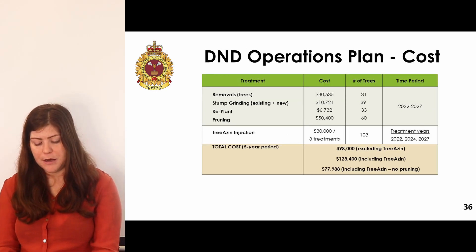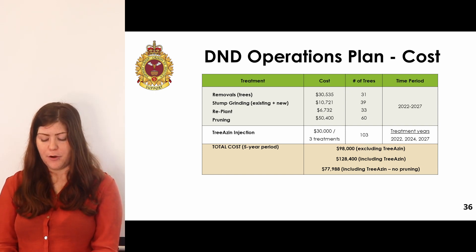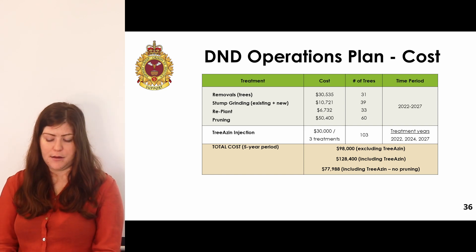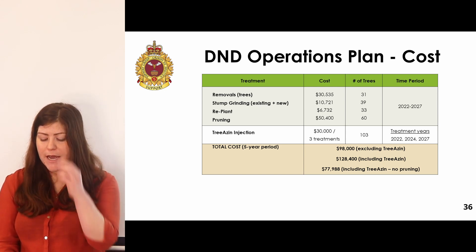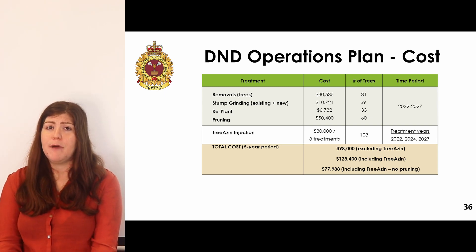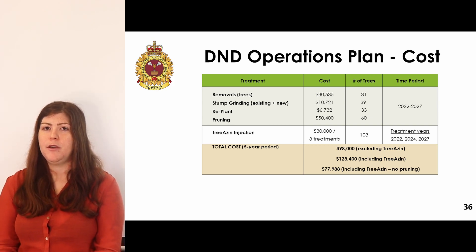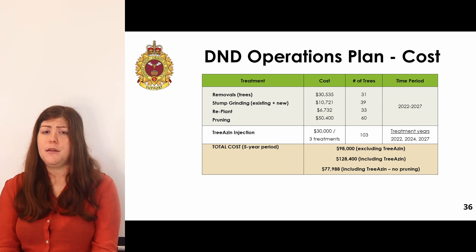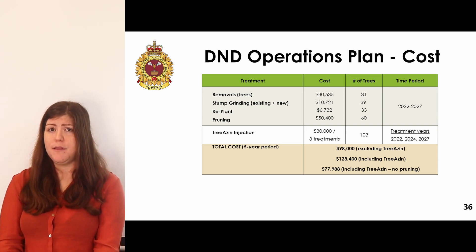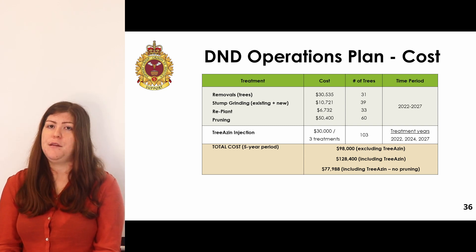The outlined costs within the first five years include removal of 31 trees with stump grinding including 8 pre-existing stumps, planting of 33 trees, and maintenance of 60 trees, totaling $98,000. With three TreeAzin treatments on 103 trees over the five-year period costing $30,000, the total budget including TreeAzin is $128,000. As this exceeds the budget, we recommend reducing maintenance within the first five years to allow for the TreeAzin treatment, bringing the operations plan without maintenance costs to roughly $78,000.